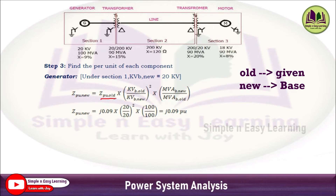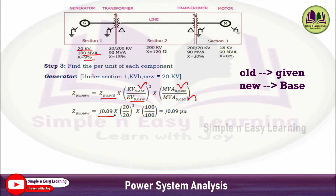For the generator, the given per unit impedance is 9% = j0.09. Substituting into the formula: j0.09 × (20/20)² × (100/100). The given KV is 20, base KV for Section 1 is 20, base MVA is 100, and given MVA is 100. Simplifying, the result is j0.09 per unit.